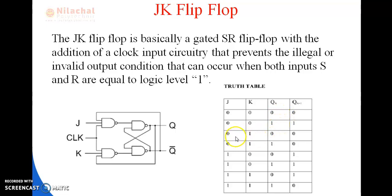When the J value is 0 and K value is 1, the output is reset — that is, Qn+1 is 0. When J value is 1 and K value is 0, the output is set — that means the value of Qn+1 is equal to 1. When J value is 1 and K value is 1, the output is in the complement form — meaning Qn+1 is the complement of Qn.